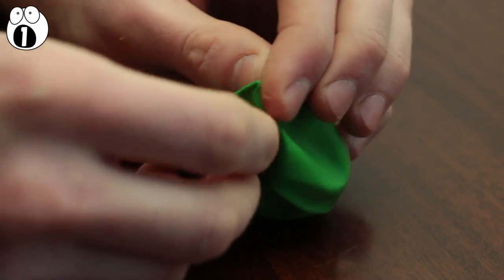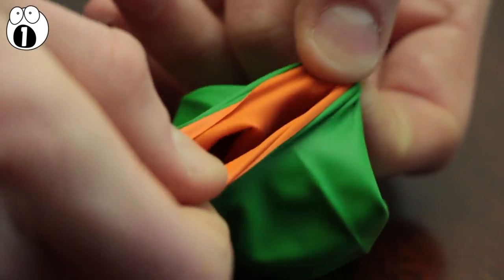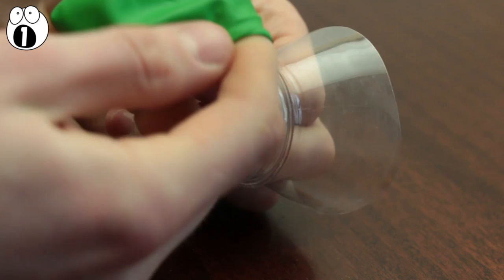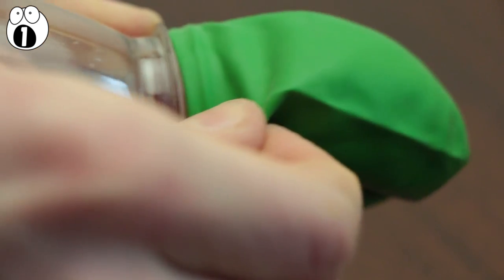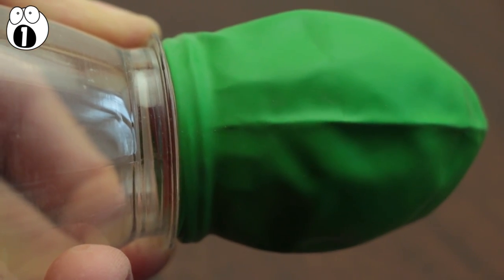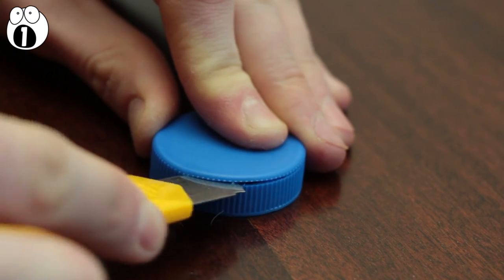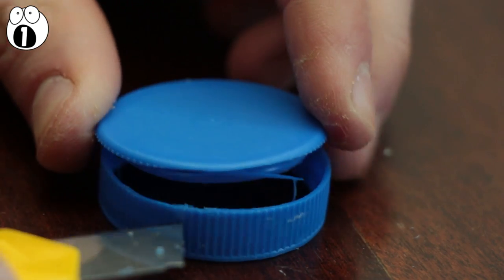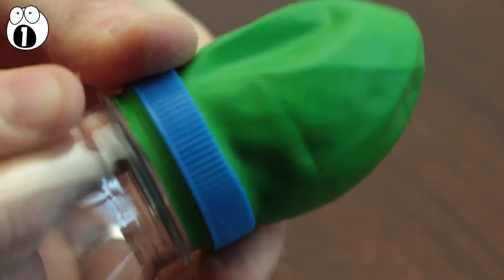Also, you can try larger balloons. They will give you a lot more power. Now all you have to do is wrap the balloon around the end part of the bottle where the thread is. Make sure it's on tightly and evenly. Now, for an even tighter fit, cut a hole at the top of the cap and screw it back on the bottle like this.